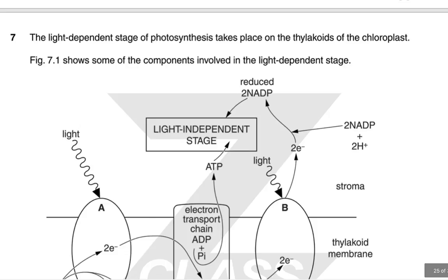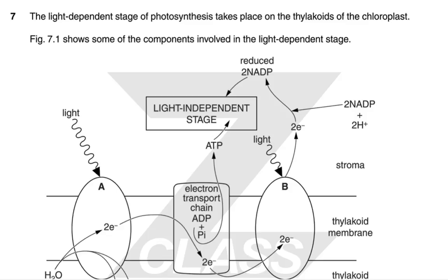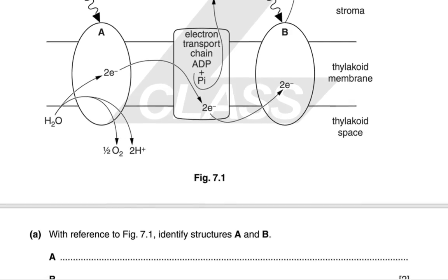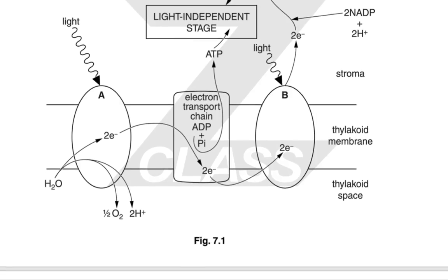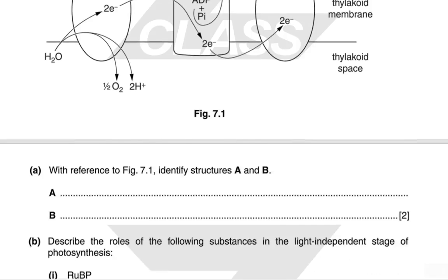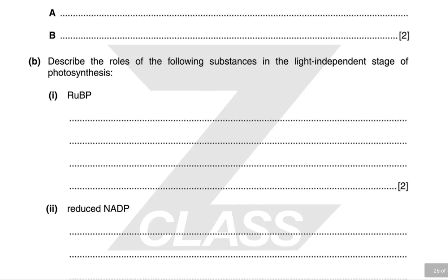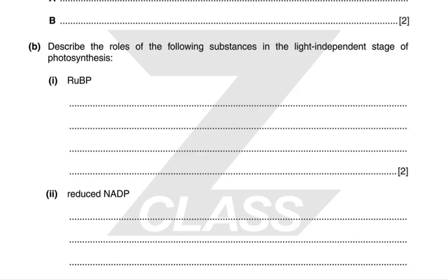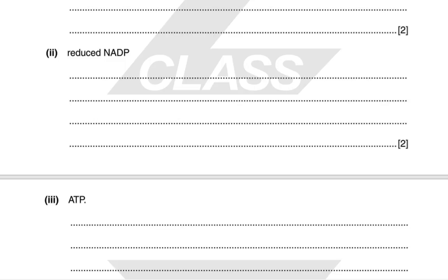The light-dependent stage of photosynthesis takes place on the thylakoids of the chloroplast. From Figure 7.1, structure A is photosystem 2 and structure B is photosystem 1. RuBP is involved in carbon dioxide fixation — CO2 and RuBP, with the help of rubisco, produce GP. Reduced NADP donates hydrogen so GP can be converted to triose phosphate. ATP supplies energy and phosphate to convert GP to triose phosphate and to regenerate RuBP in the Calvin cycle.